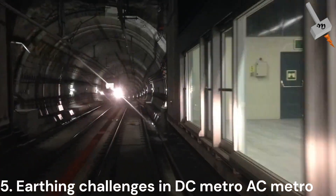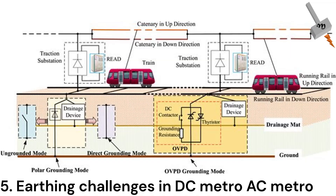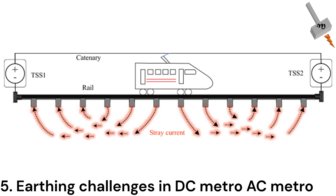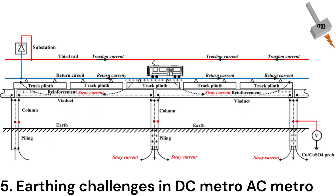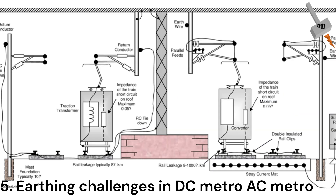The fifth difference is the earthing arrangement in both cases. In DC, the grounding arrangement is trickier for several reasons: the risk of electrocution in case of DC grounding is higher, and the soil near DC grounding stores higher charge, causing galvanic corrosion and adverse effects to the ecology. In the case of AC, the grounding arrangement does not pose such risks.